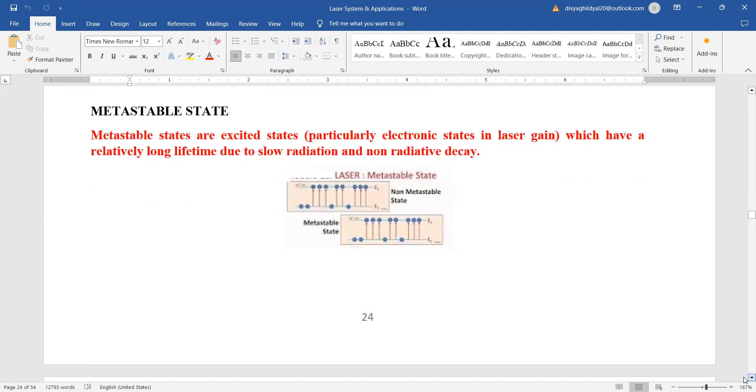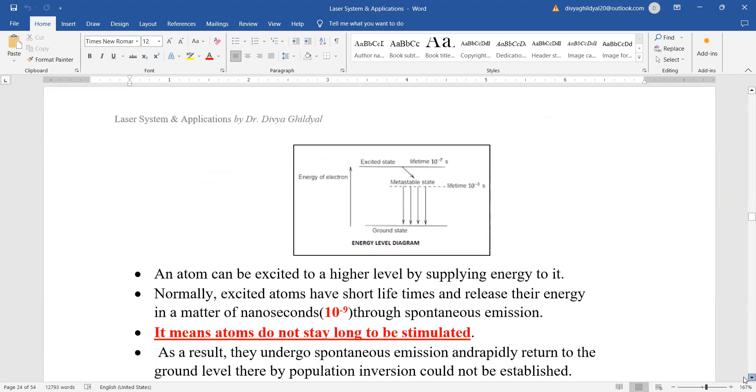Metastable state. This definition has been asked many times in section A. Metastable, these are states that are excited, particularly the electronic states in laser gain, which have a relatively long lifetime due to slow radiation and non-radioactive decay. See, metastable state, the number of atoms in excited state is more than that in the lower state. And metastable state here, the atom is staying for a longer period of time compared to your non-metastable state. And the dropping of atom from metastable state to ground state will only give rise to laser light. So you can have a look at another diagram here.